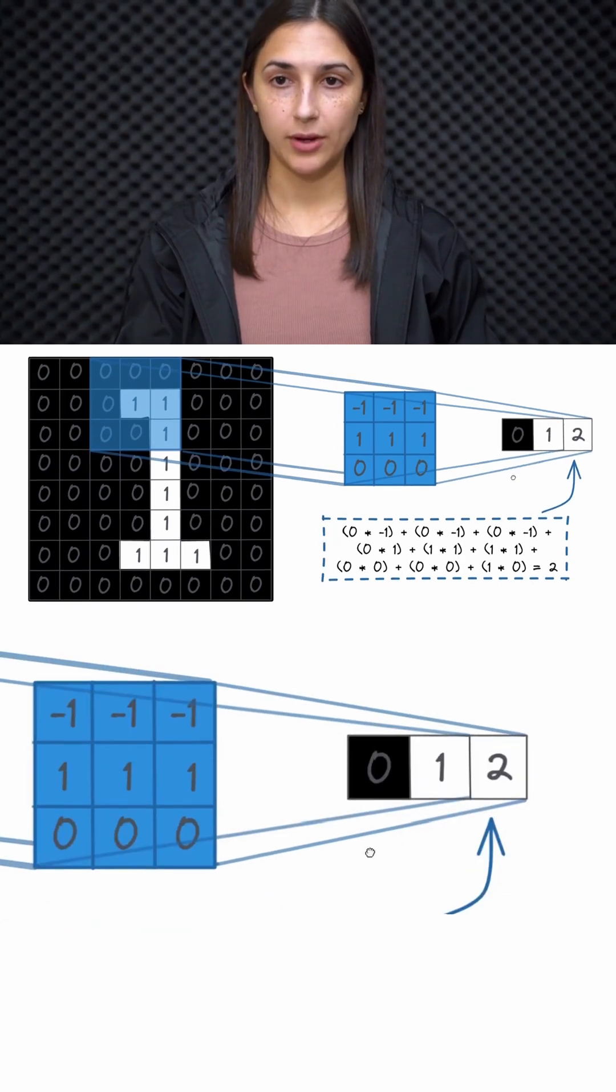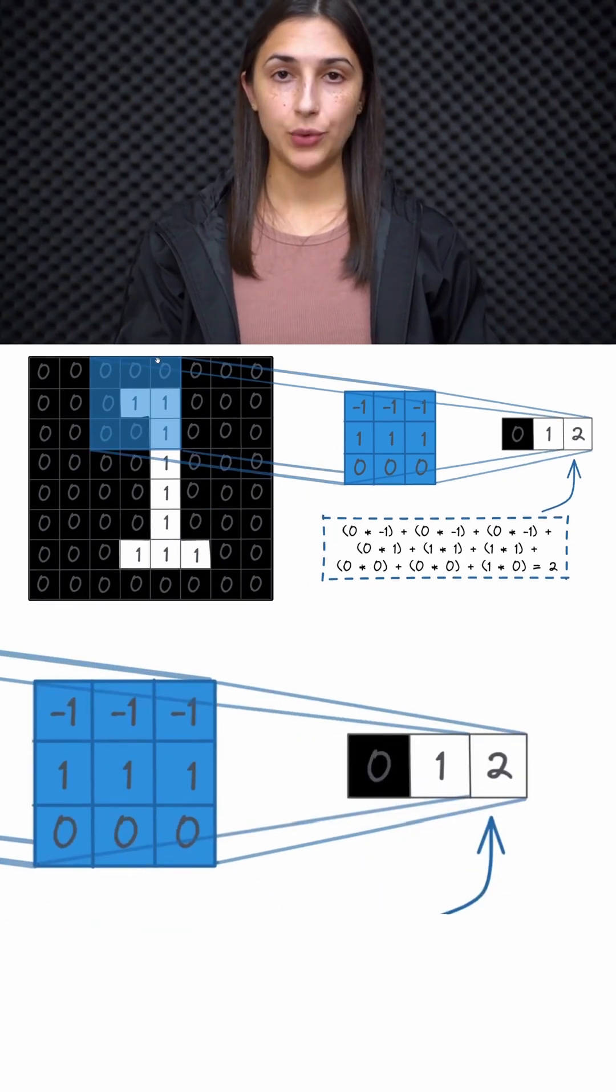If we move right again by a stride of 1 on the input, then now we are on this 3x3 block of input here that we perform a convolution operation using the filter, which results in an output value of 2.